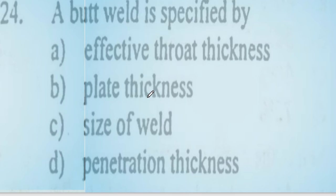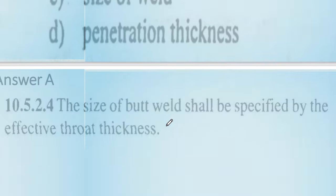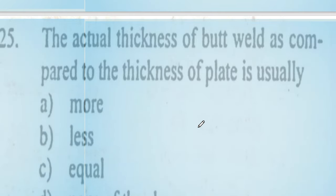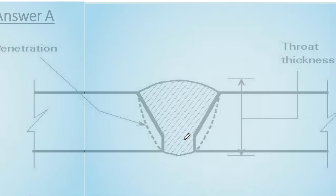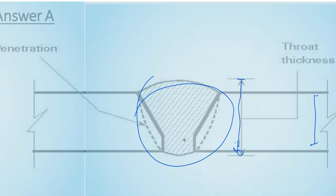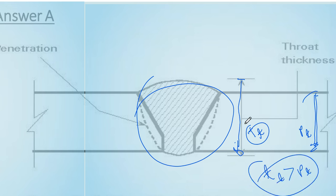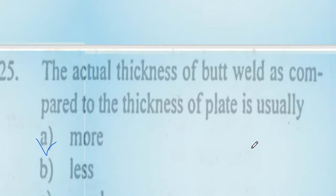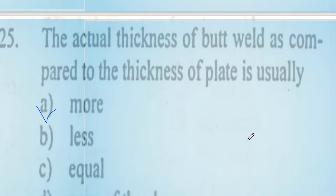Question 24: a butt weld is specified by its effective throat thickness. Question 25: the actual throat thickness of a butt weld as compared to the thickness of the plate is more — the throat thickness is generally greater than the plate thickness. Option number A is correct.